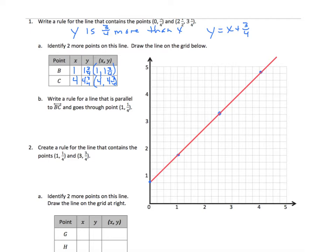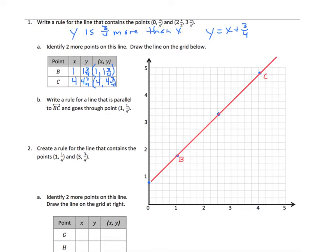It says, create a rule for a line that is parallel to BC. And that's our line here. I haven't labeled those, but so I will. We've got point B and I have point C. So we need a line that's parallel to that that goes through 1 and 1/4. So let's plot that point.